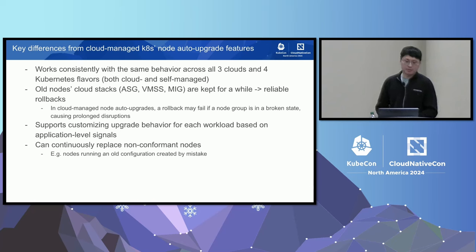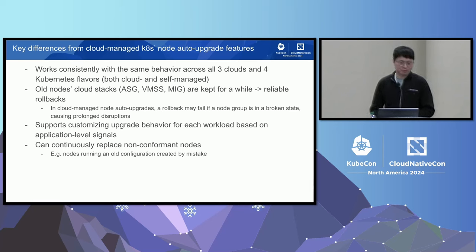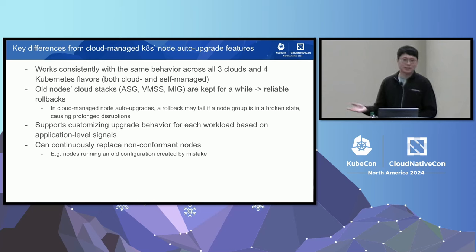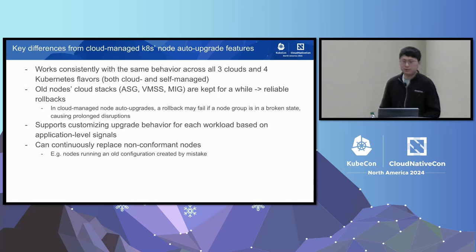We support customizing upgrade behavior for each workload based on application-level signals, which is not possible with cloud-managed auto-upgrades. The system can also continuously replace non-conforming nodes. For example, if someone accidentally scales up nodes running the old configuration, or if the auto-scaler has bugs that incorrectly scale up old nodes, the system is always online, detects non-compliant nodes in real time, and immediately runs the rolling upgrade to replace them with new nodes.